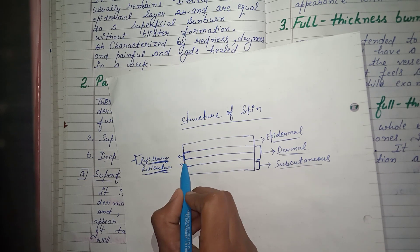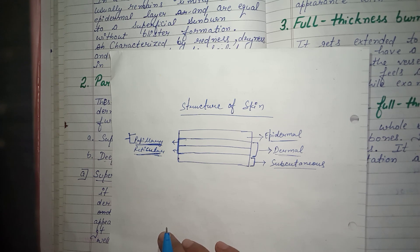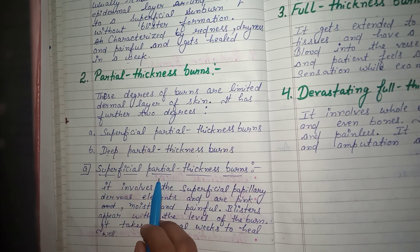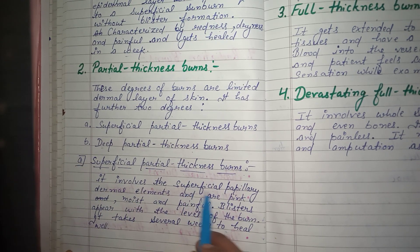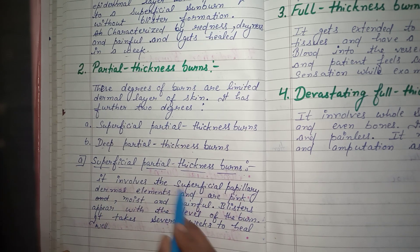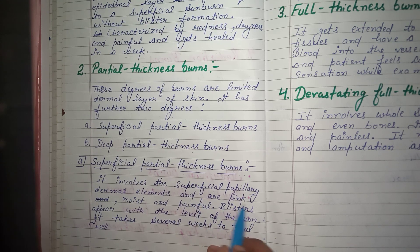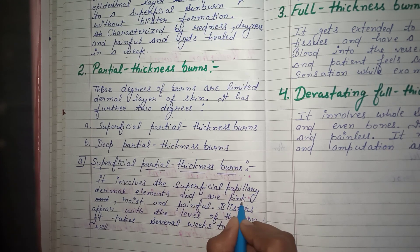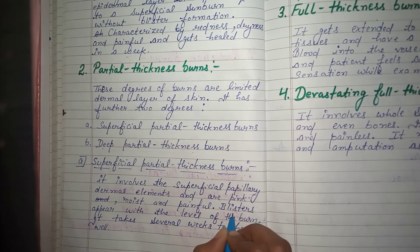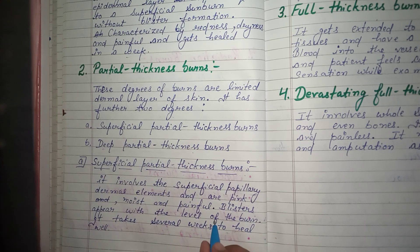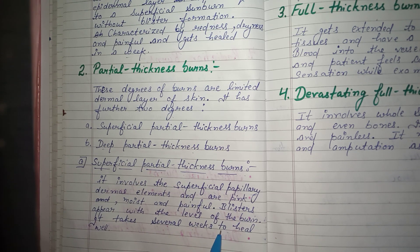Superficial partial thickness burn involves the superficial papillary dermal elements. The skin appears pink, moist, and painful. Blisters appear with this level of burn and it takes several weeks to heal.